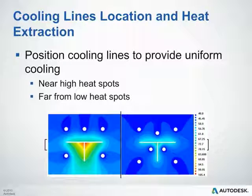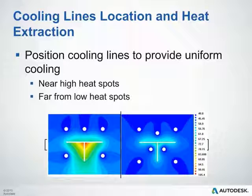This slide illustrates how the location of your cooling lines can affect heat extraction within the mold. We want to position cooling lines to provide uniform cooling — placing them close to hot spots or far from cold spots. Poor placement, as shown on the left, will likely cause warpage or increased cycle time. The improved layout on the right results in more uniform cooling, decreased cycle time, and better overall part quality.